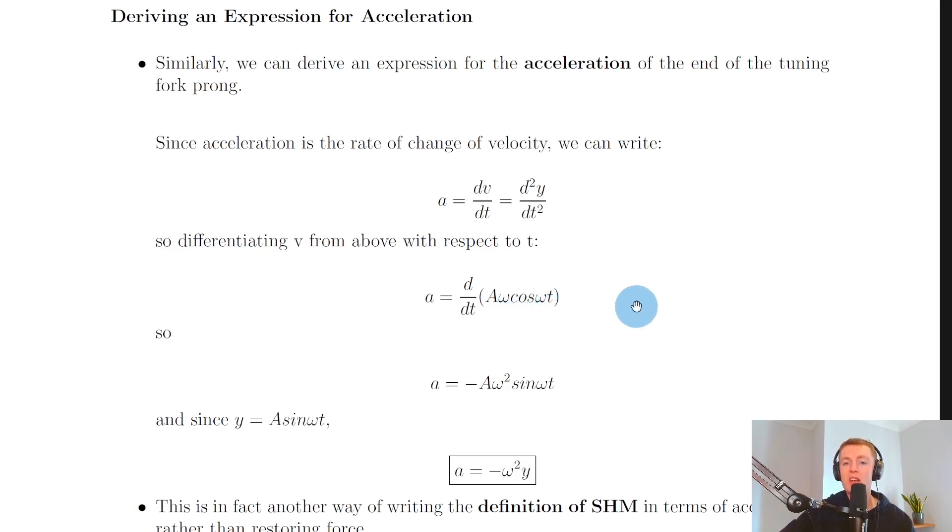So what we can then do is differentiate it again to get the acceleration a equals d by dt of a omega cos omega t since a equals dv by dt. And if you do that, you can hopefully see that differentiating cosine gives you negative sine,